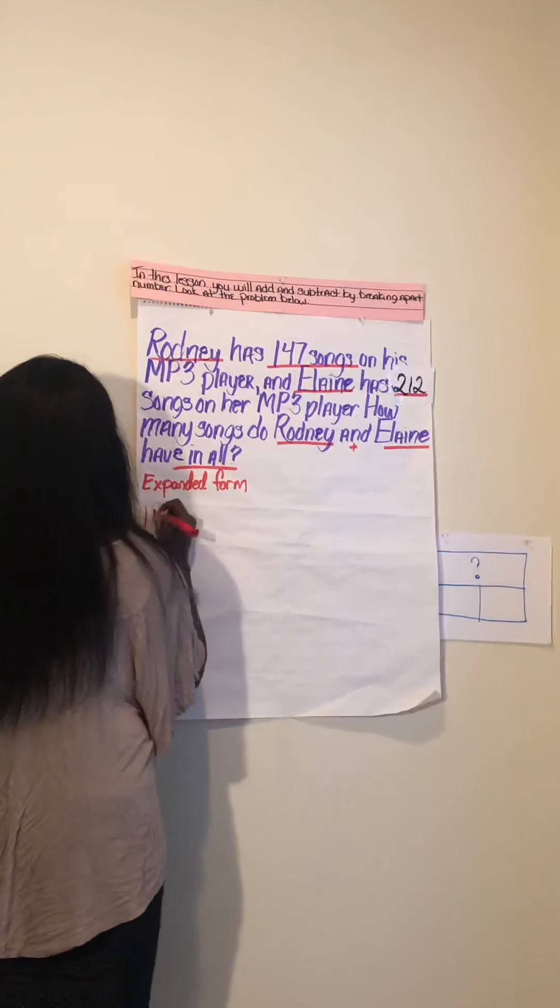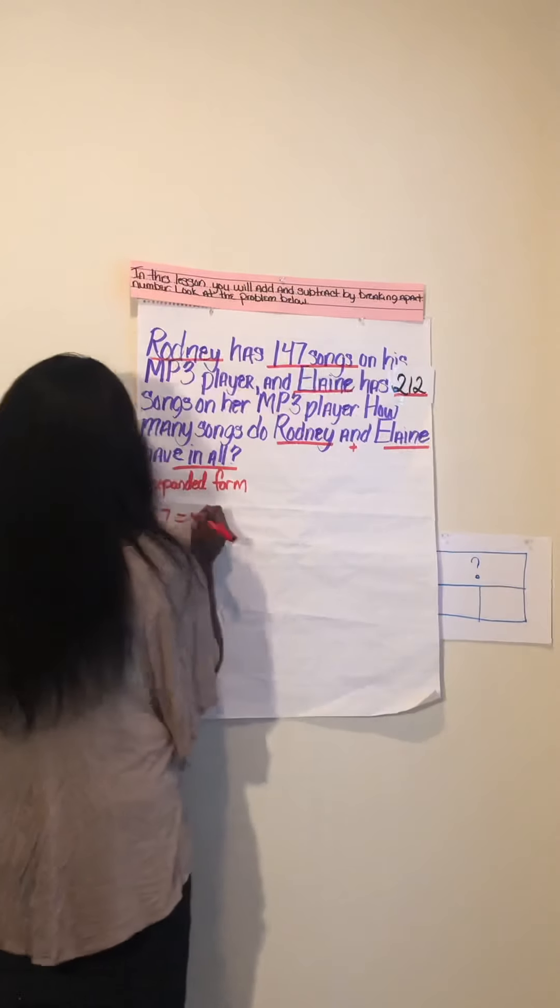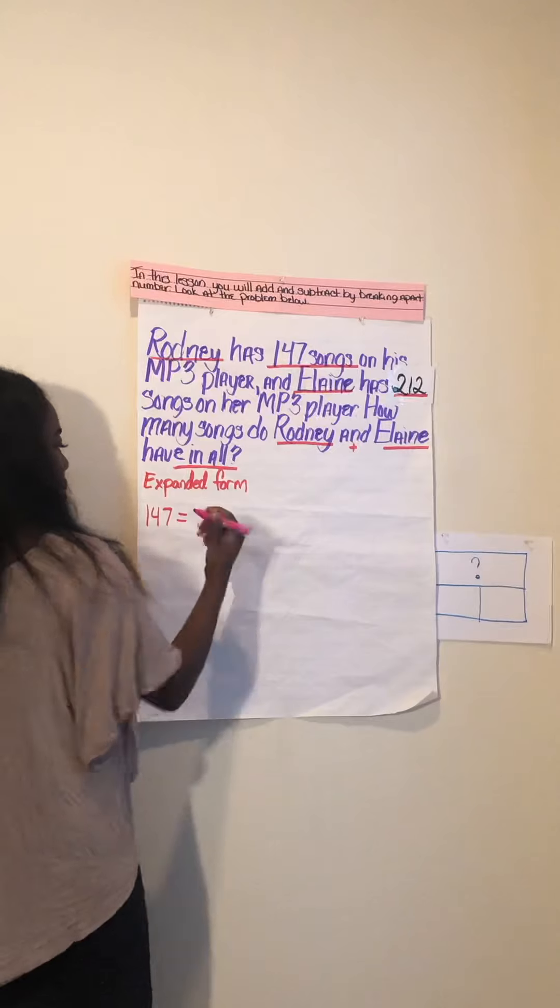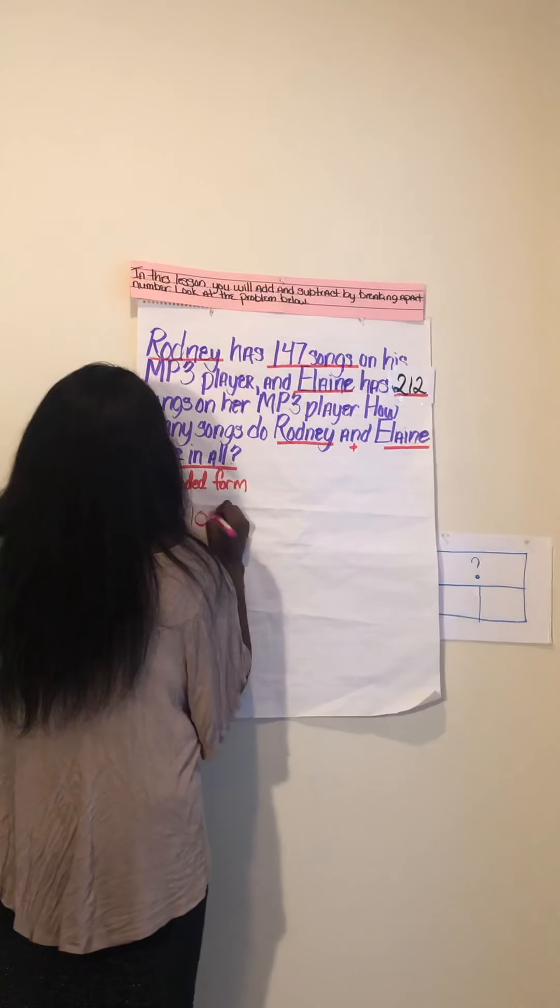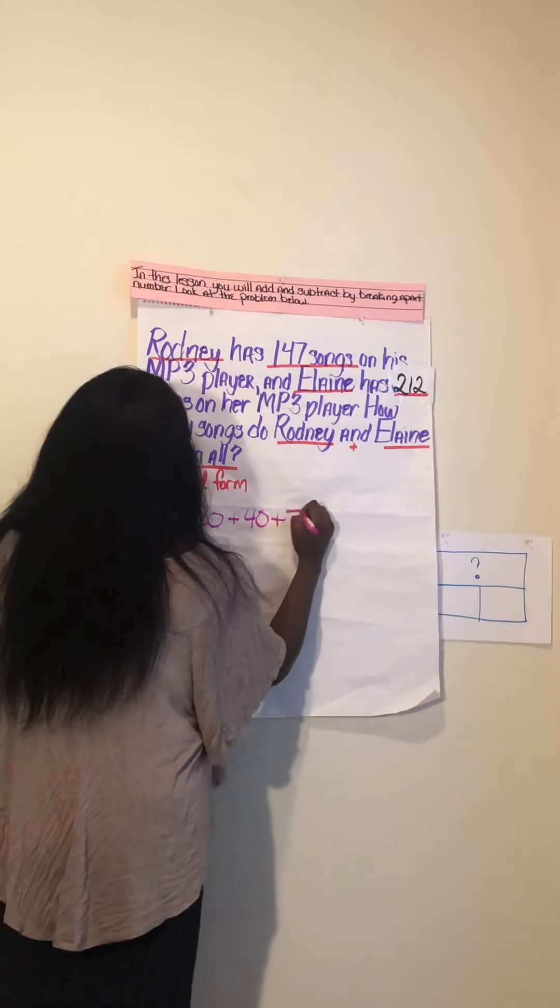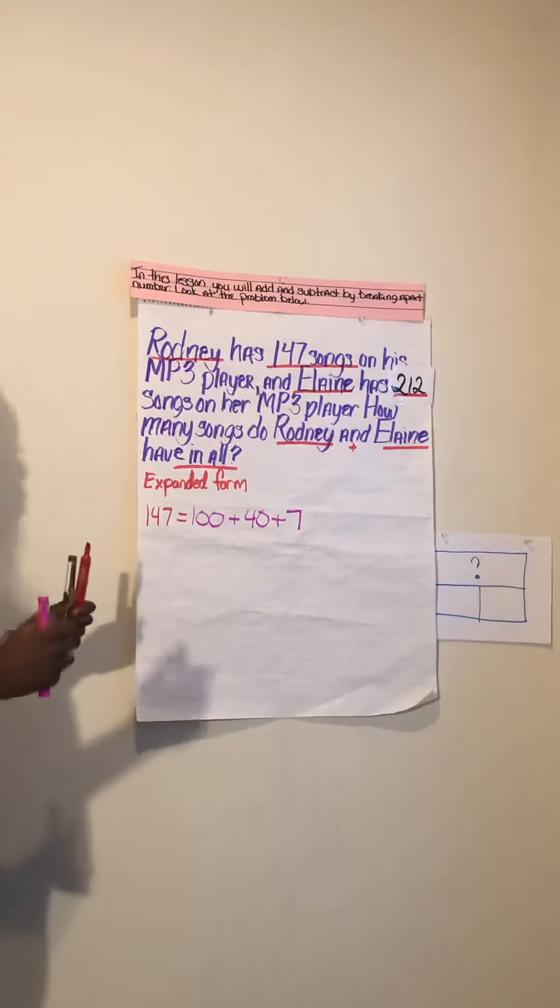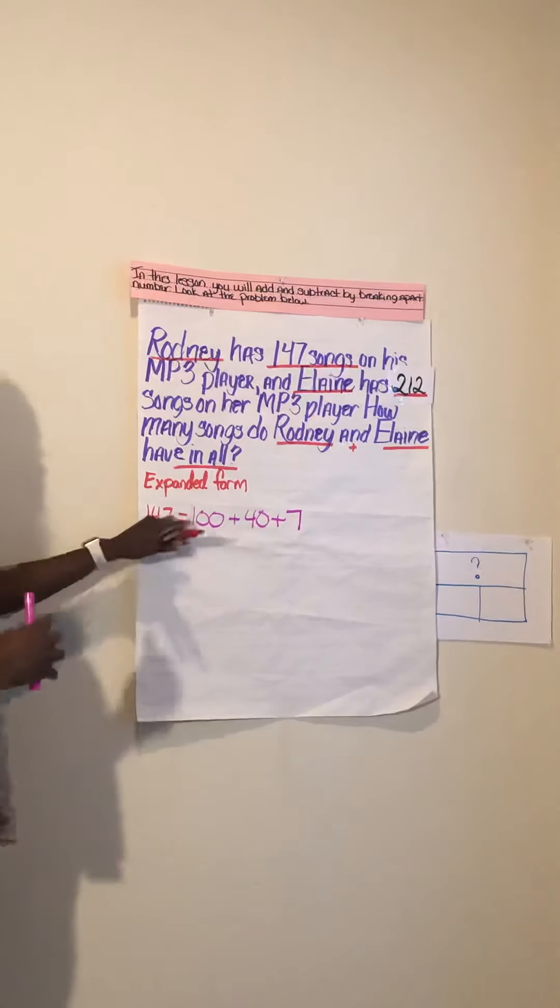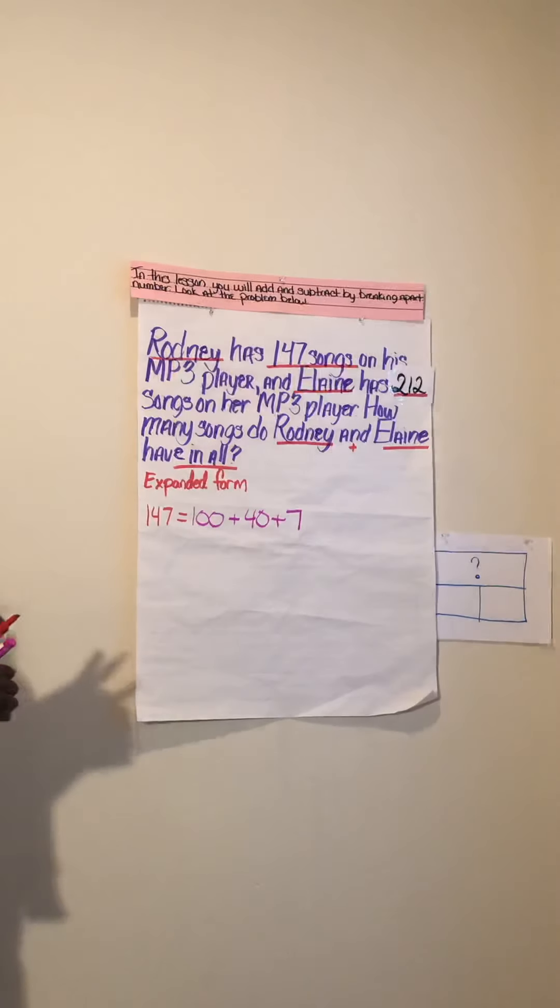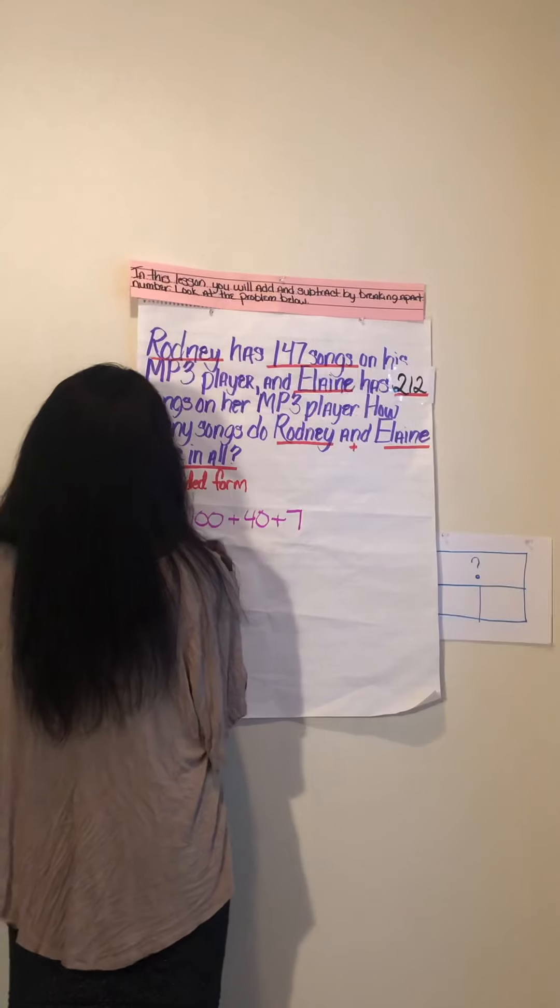Rodney has 147 songs, so the number 147 expanded is 100 plus 40 plus 7. That's the number in expanded form - those are the values you will have to add together to get 147.